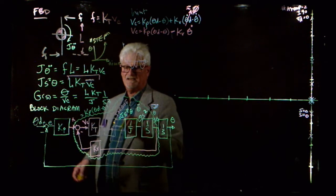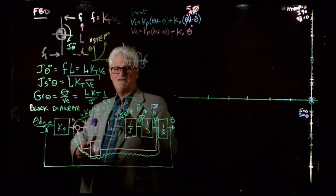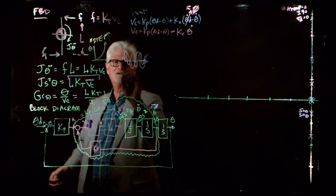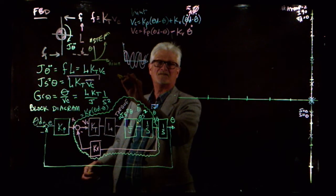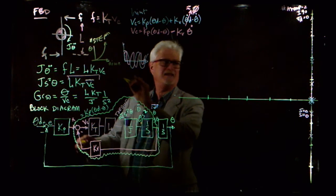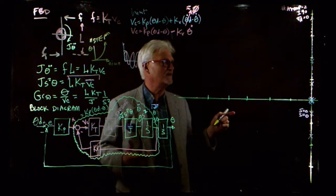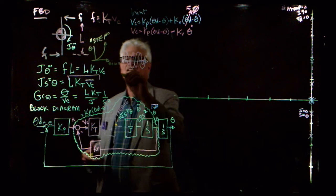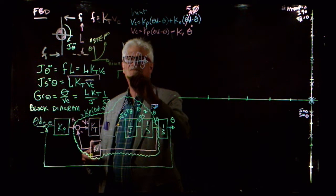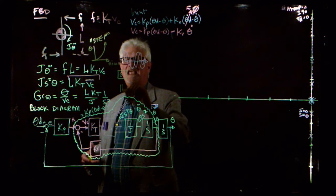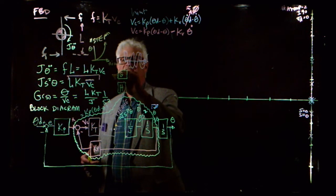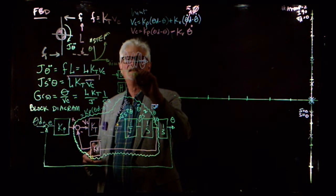In the equivalent block diagram, what we're always trying to do — somebody asked about this — is to get into a normal control system configuration where G is the feedforward and H is the feedback. The open loop system is G*H(s), and we can find the equivalent transfer function for this inner loop.